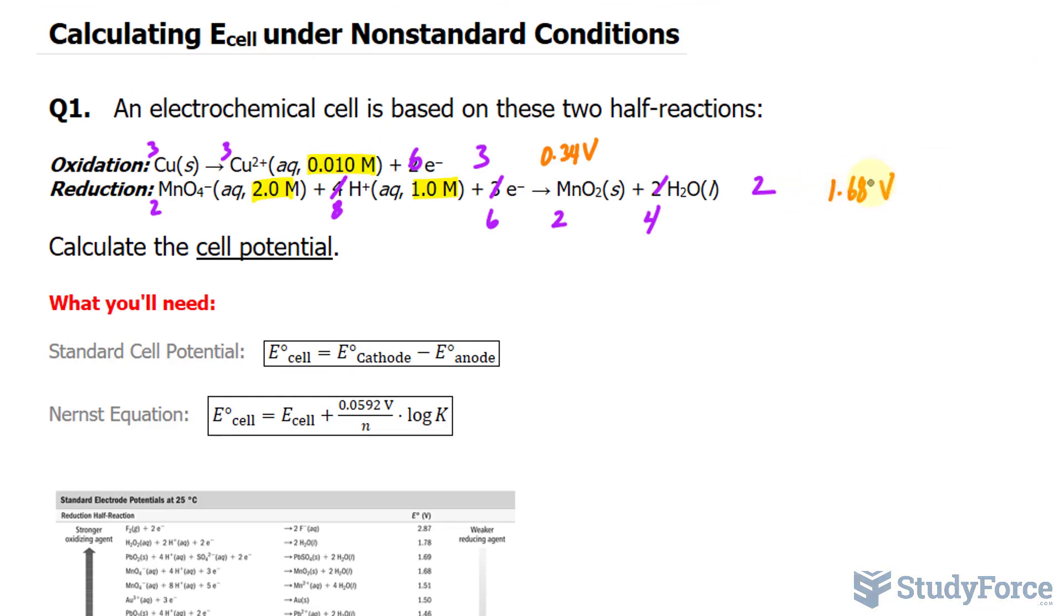Now keep in mind that by multiplying the top and the bottom equations by a new factor, such as 3 and 2, that doesn't change this value that's in orange. Now we can combine. Notice that we have 6 electrons here, and 6 here. They will be canceling out, so I'll just put an X through them.